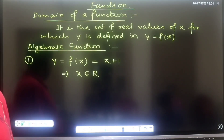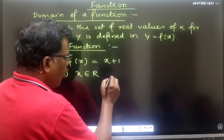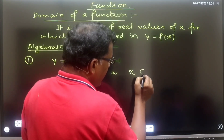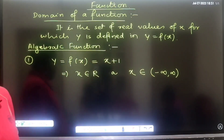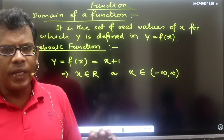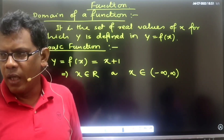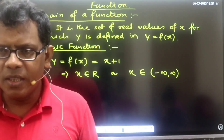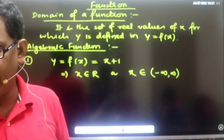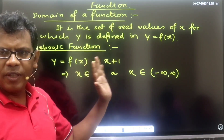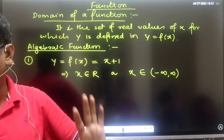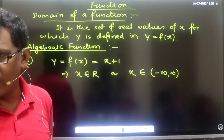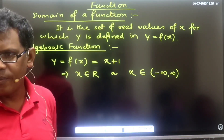So ultimately, whatever value of x you put, y will always be defined. This means x belongs to all real numbers, which we write as capital R. In set notation, this is the open interval from negative infinity to positive infinity. Infinity is always an open interval because you cannot mark or plot exact infinity.